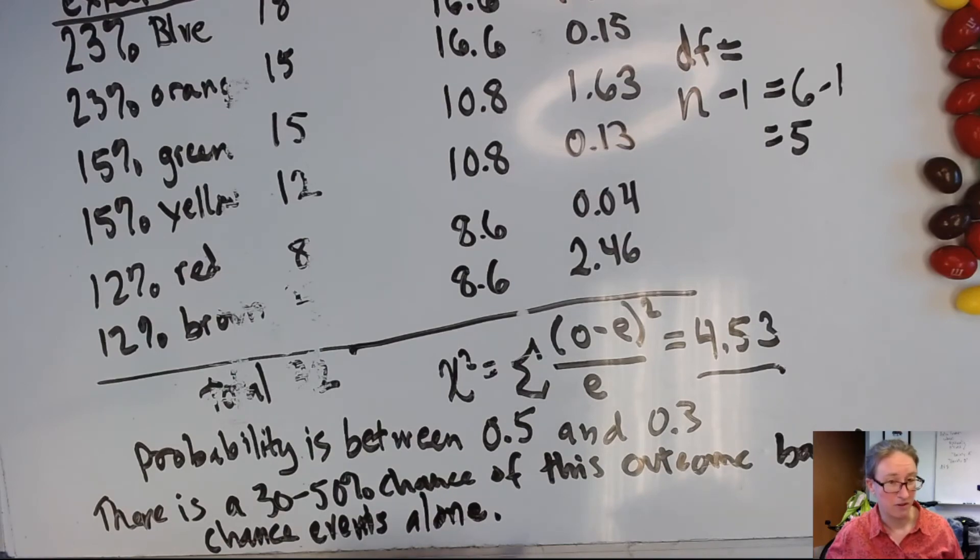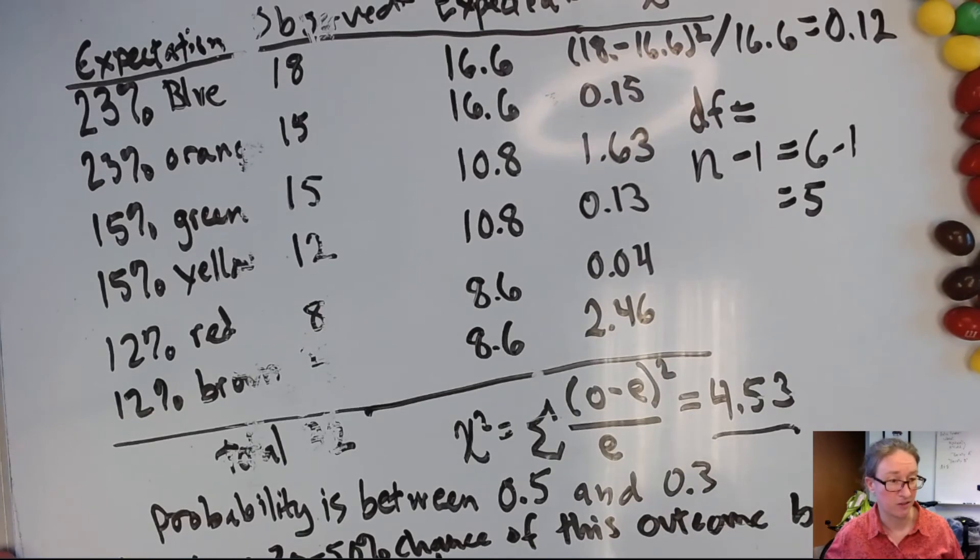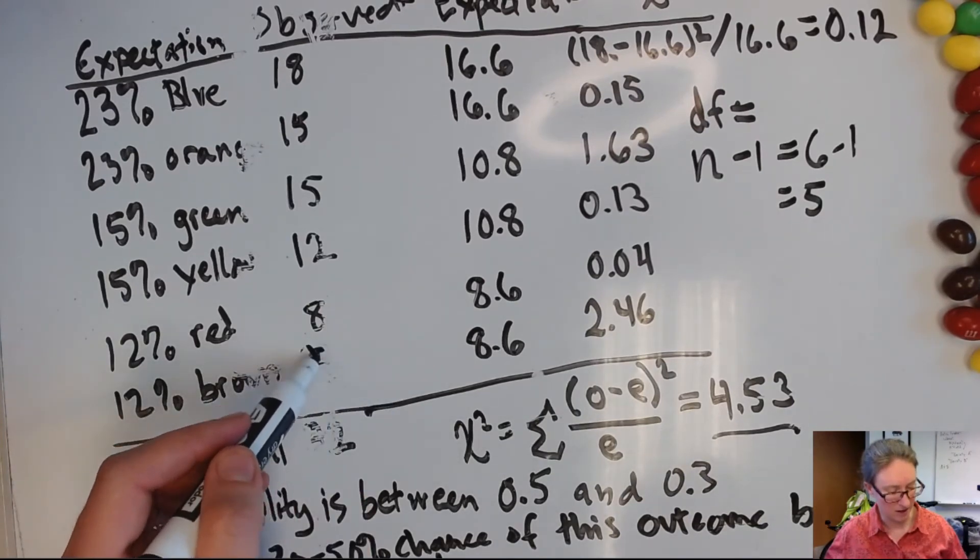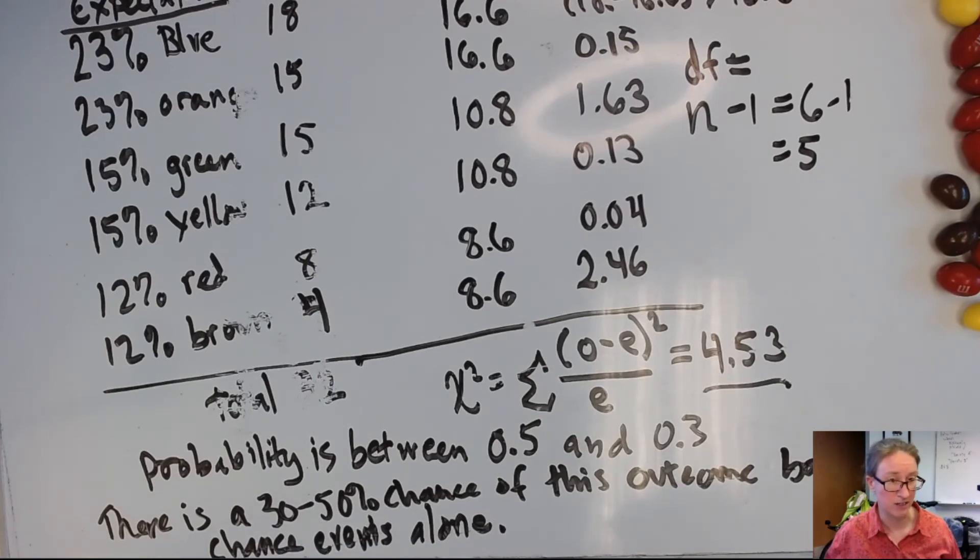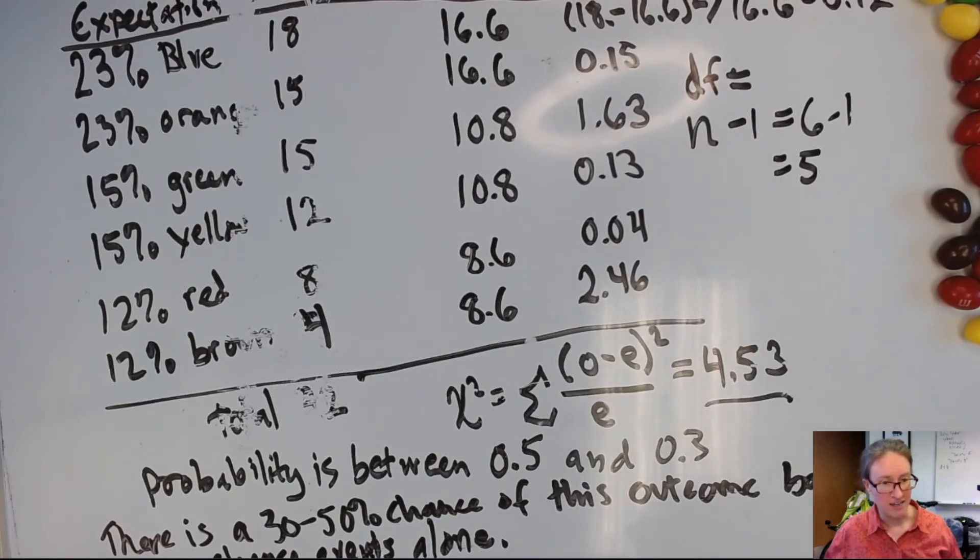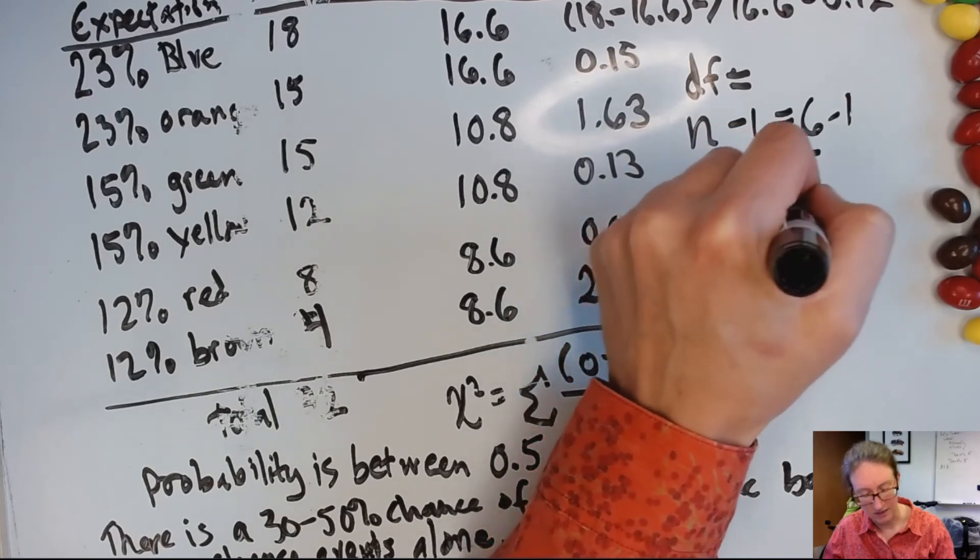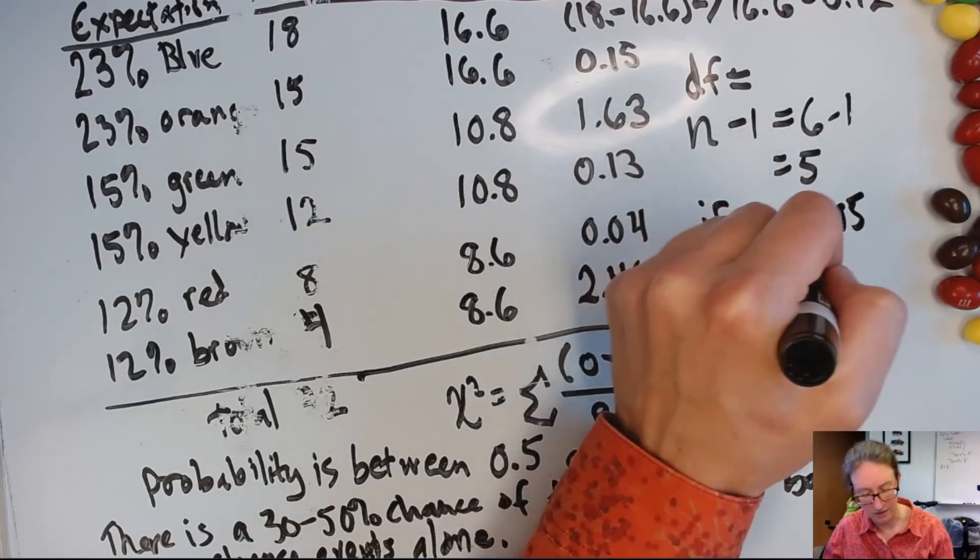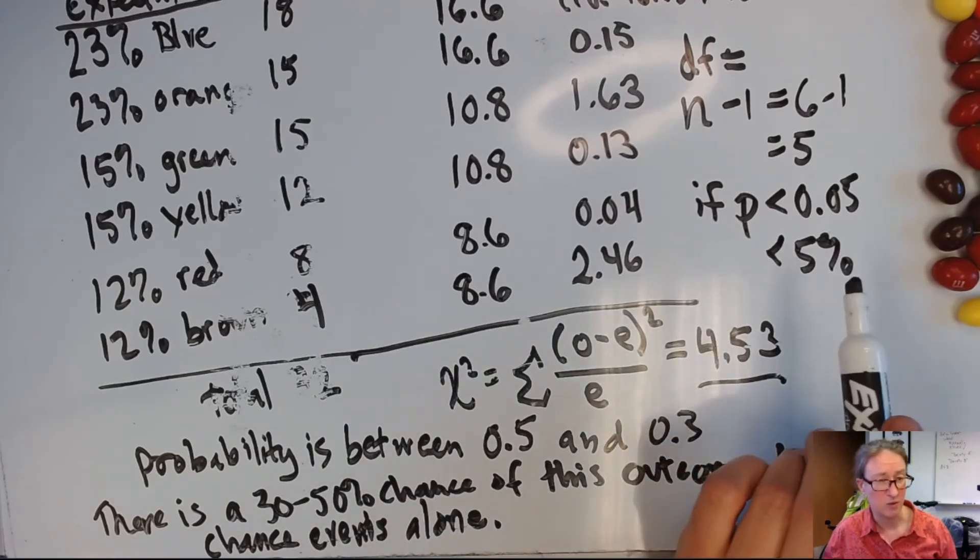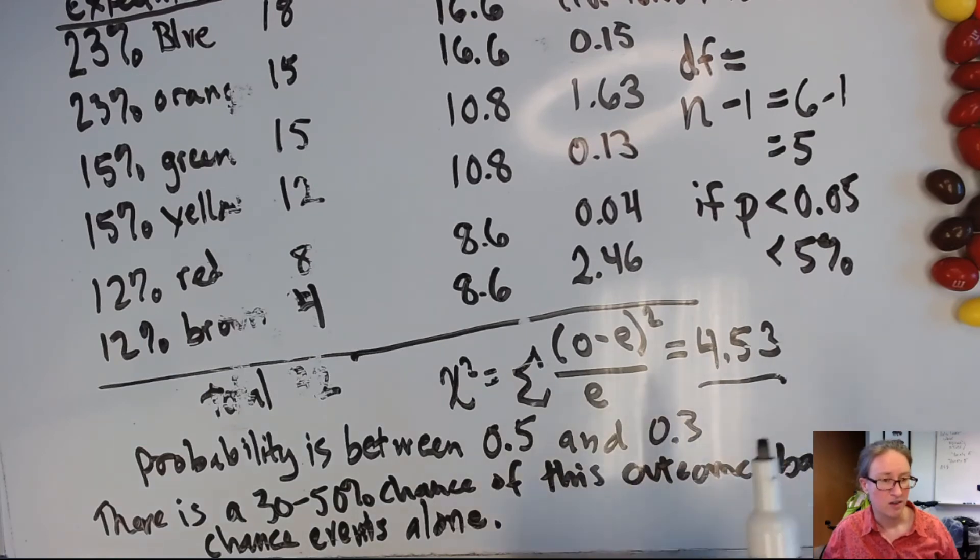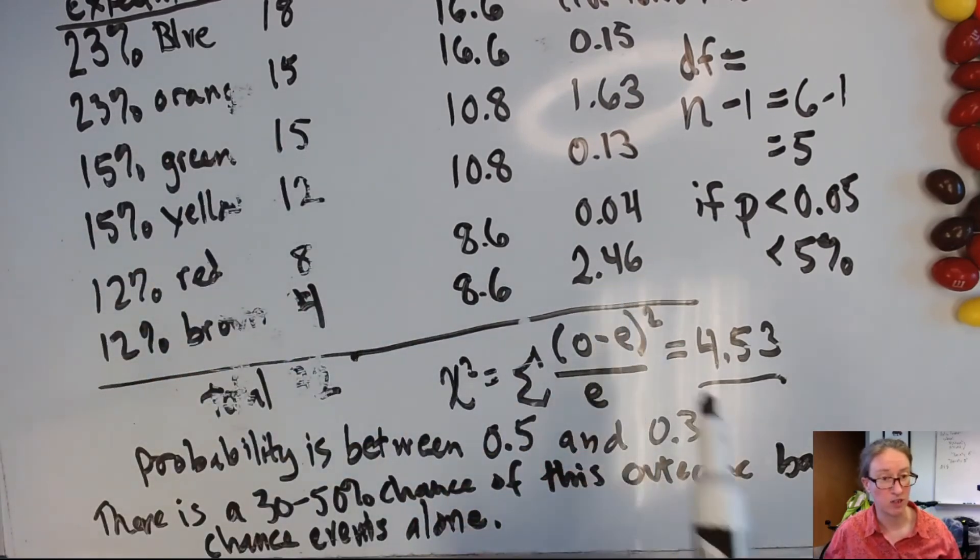So in other words, there is no problem with this distribution of M&M colors. So even though my actual colors aren't exactly the same as what I would expect based on what the Mars company has reported for the frequency of these colors in a bag of M&Ms, in fact, there's a fairly strong chance that this could have happened just based on chance events alone. So the thing you want to watch out for is if your probability is less than 0.05, so that's less than 5%, so if the chance of this outcome based on chance alone is less than 5%, that's a really small percentage. So in that case, you would then conclude that there's a small chance of that outcome based on chance events alone. And so something else must be going on to explain the difference between what you observed and what you would expect to get.